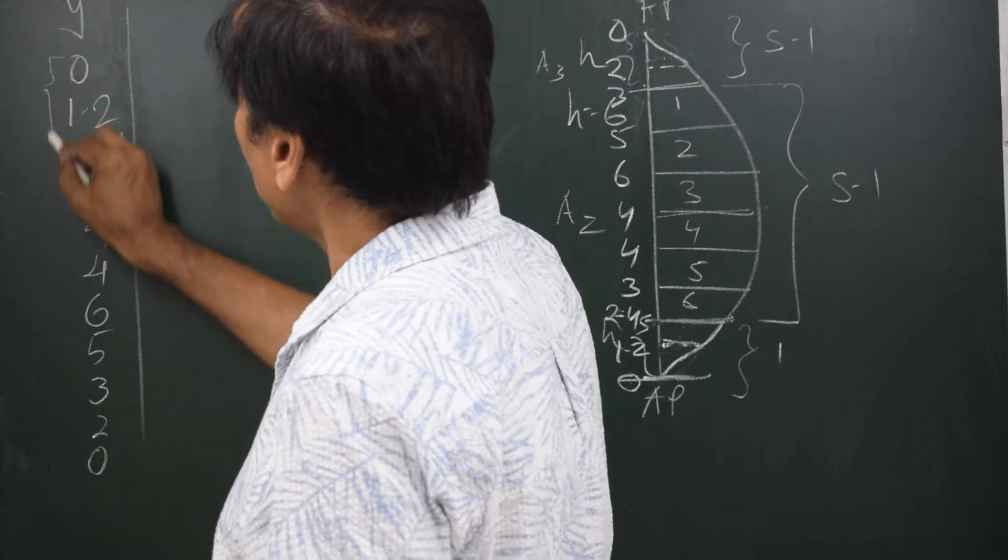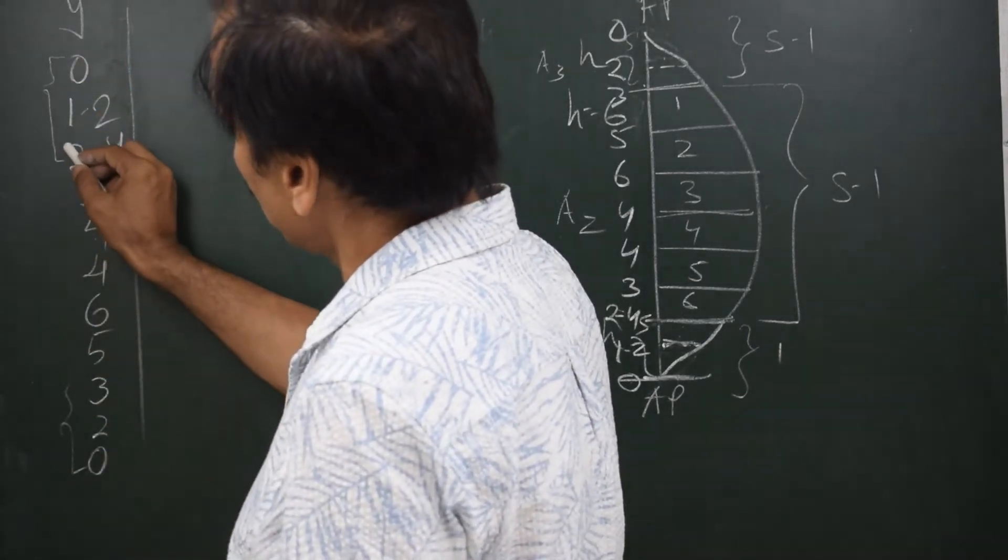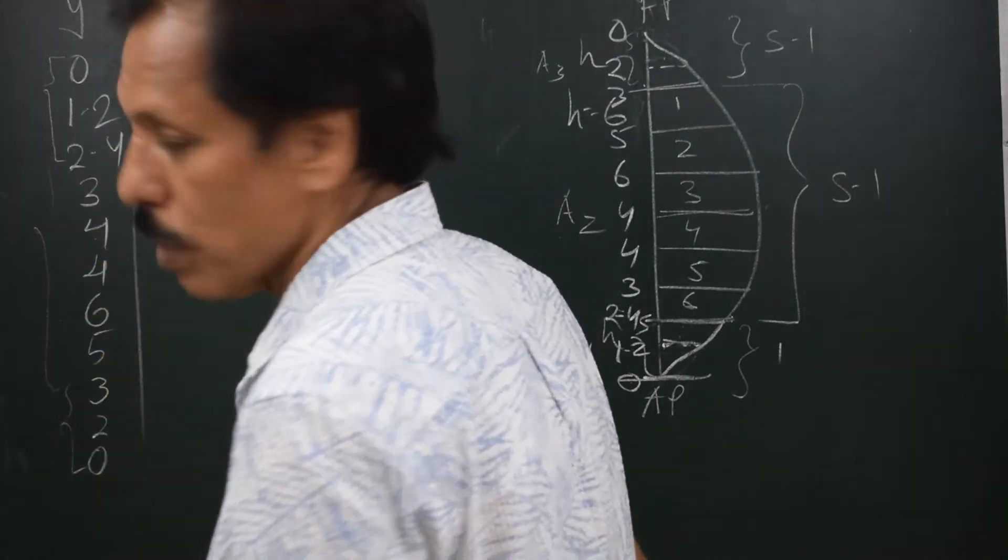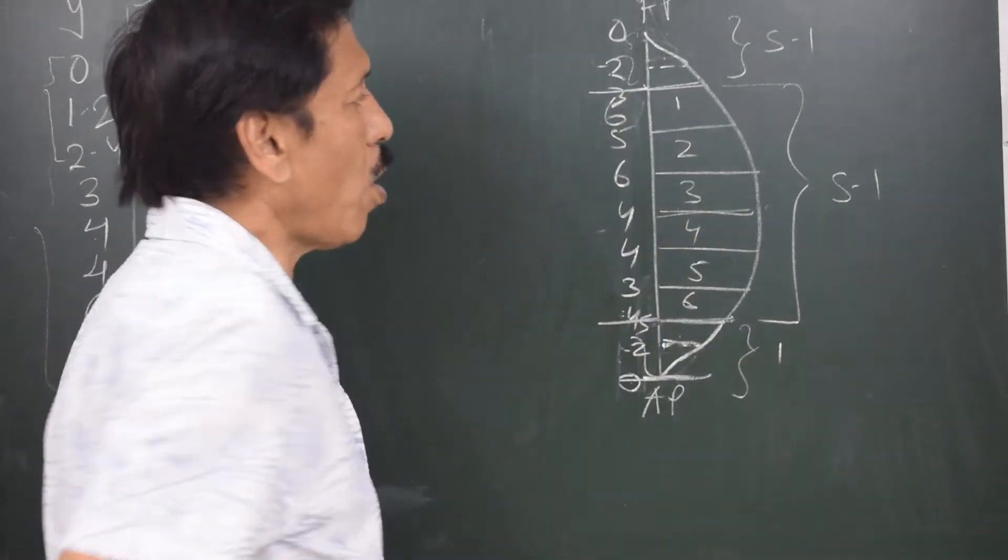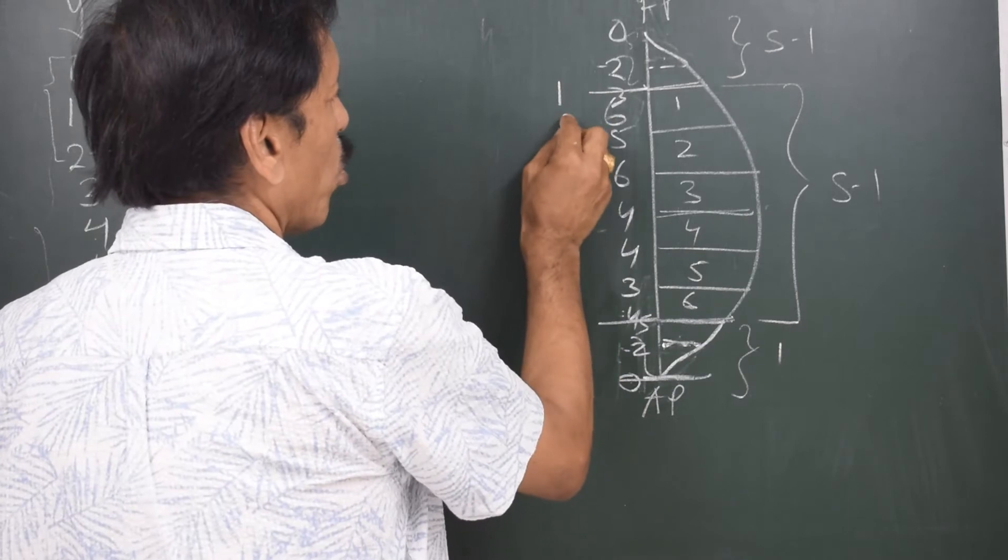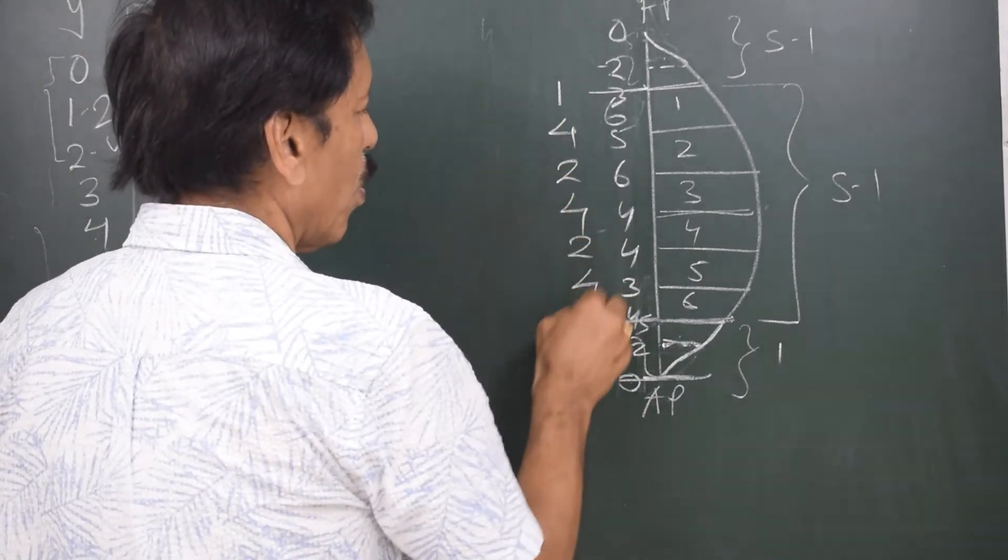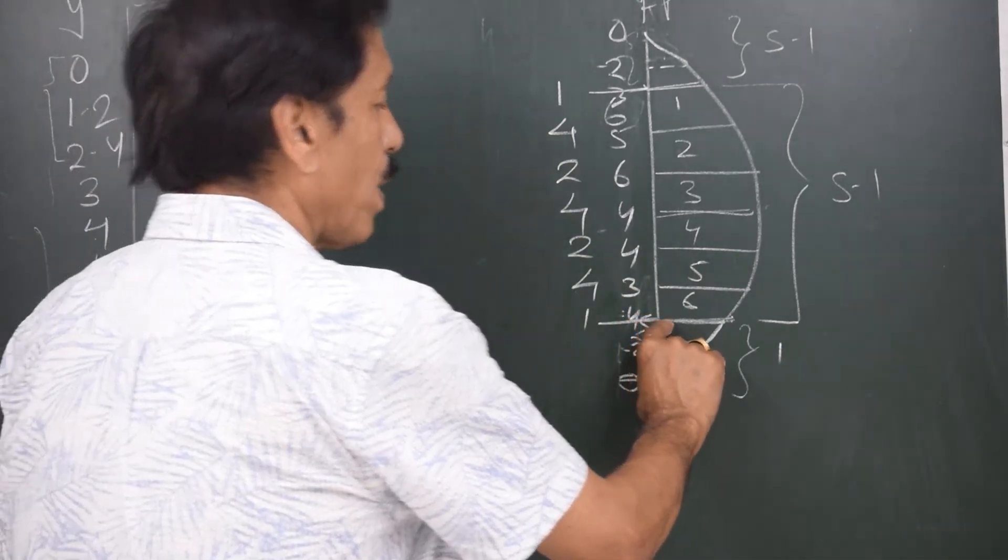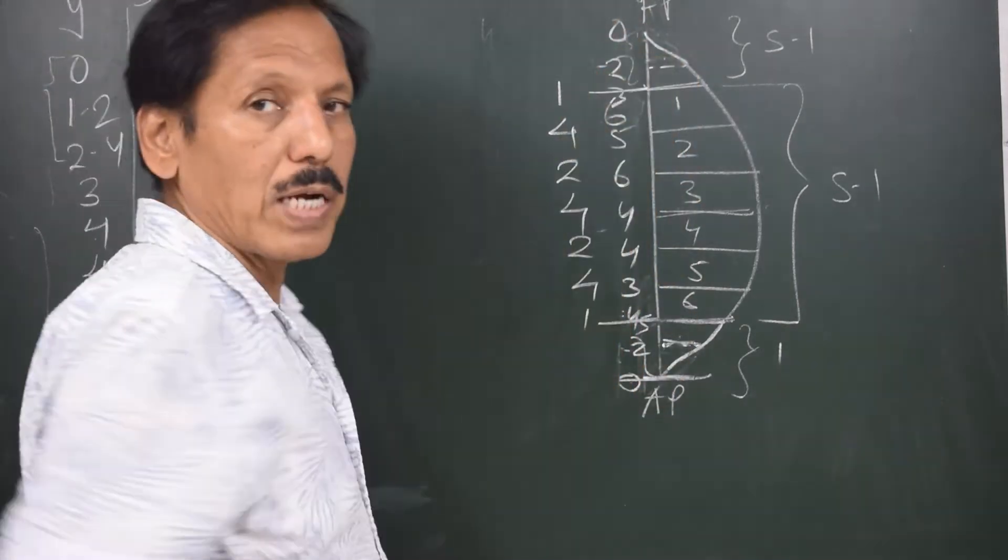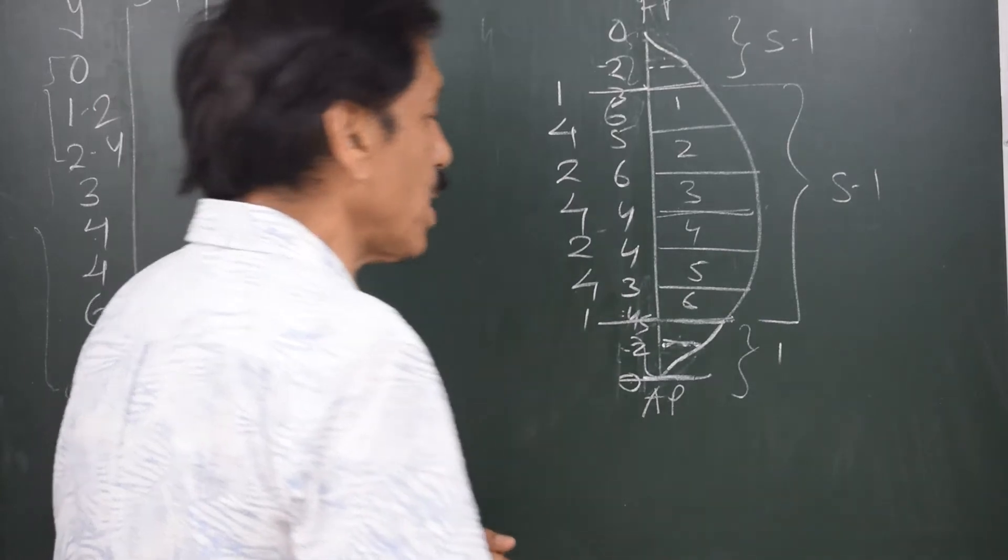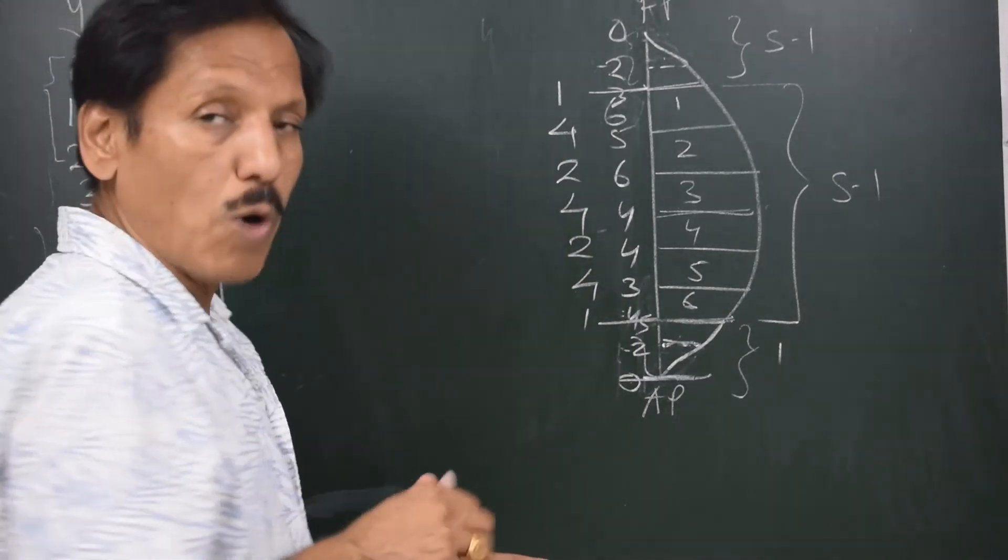The only thing is the separation between these ordinates is three meters whereas separation between these ordinates is six meters. We will take care of that. Let us consider this middle section. In the normal situation, if we had to take the Simpson's multiplier, it would be one, four, two, four, two, four, one. Similarly, this part has to be done by Simpson's first rule. The multipliers would be one, four, one. Over here also the multipliers would be one, four, one. But we have to compensate if we want to accommodate everything in the same table.